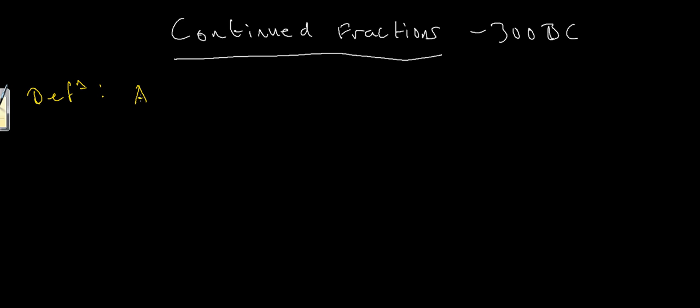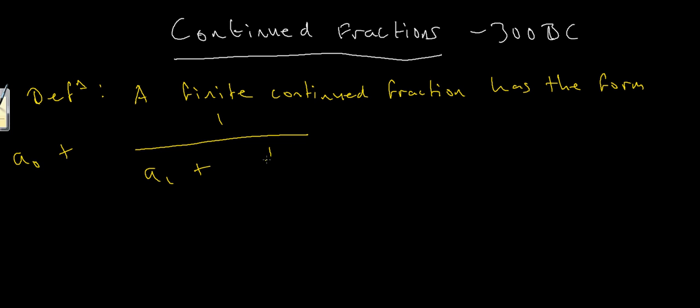A finite continued fraction has the form a0 plus 1 over a1 plus 1 over a2 plus 1 over dot dot dot plus 1 over an.